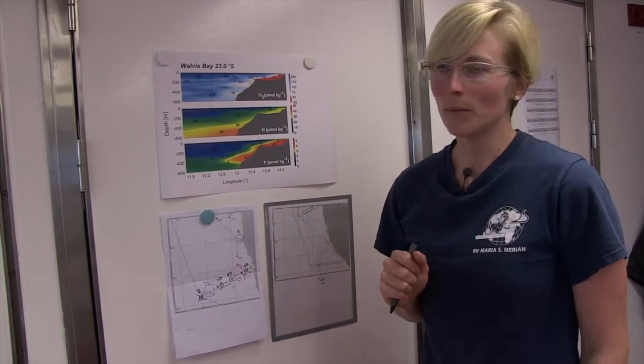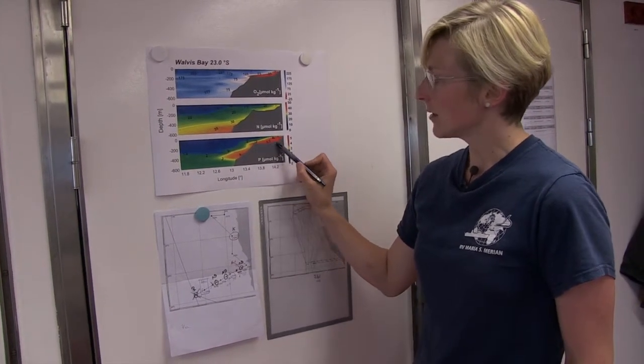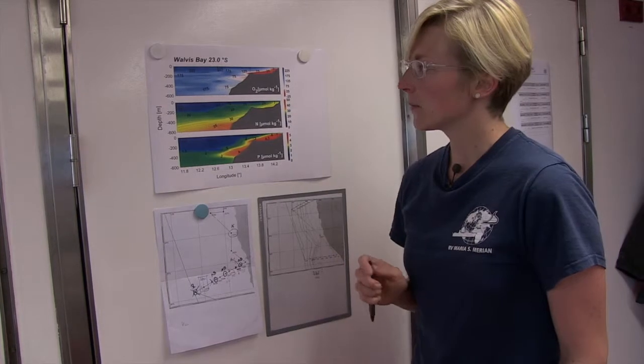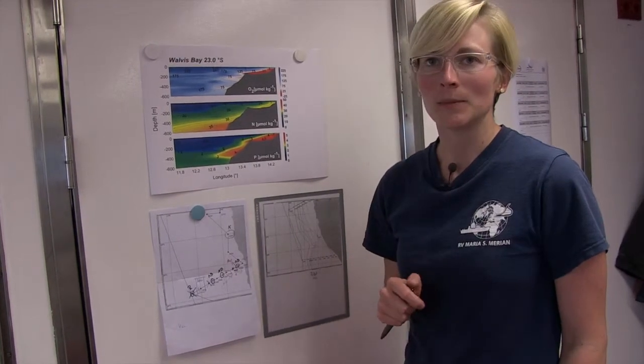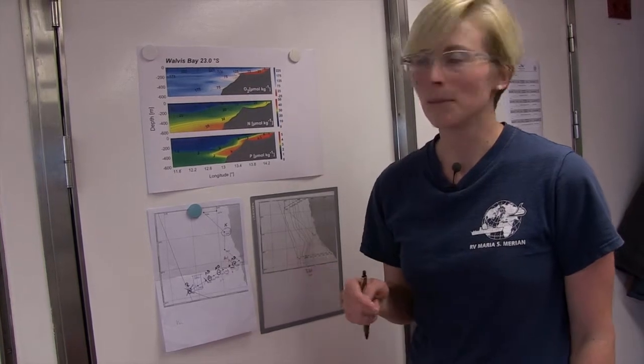For phosphate, the situation is actually the other way around. Phosphate increases greatly in these oxygen minimum zones. This is actually due to the activity of bacteria that live in oxygen-deficient conditions and add phosphate to the water column.